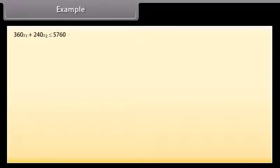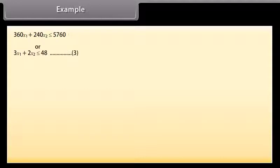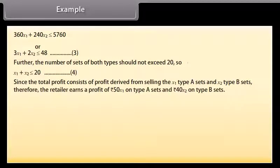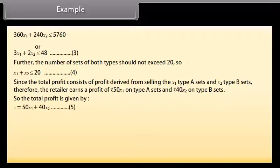The cost of X1 sets of type A and X2 sets of type B is 360X1 plus 240X2, which should be less than or equal to Rs. 5760. That is, 360X1 plus 240X2 ≤ 5760, or 3X1 plus 2X2 ≤ 48 (equation 3). Further, the number of sets of both types should not exceed 20, so X1 plus X2 ≤ 20 (equation 4). The total profit Z equals 50X1 plus 40X2 (equation 5).